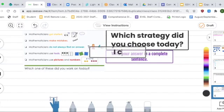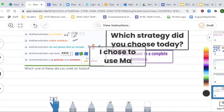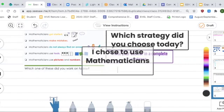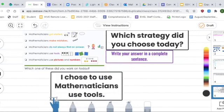A complete sentence is 'I chose to use...' So I was able to just spell it correctly because it's on my page.